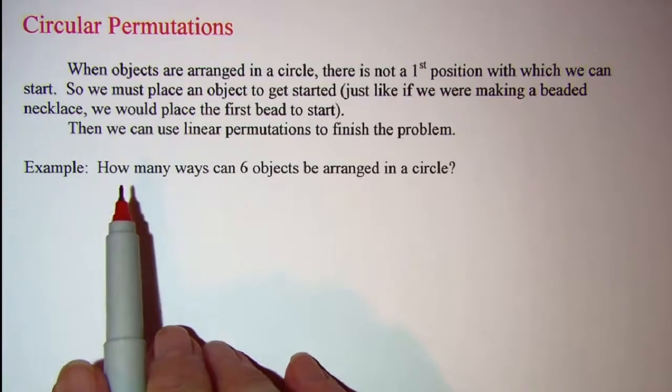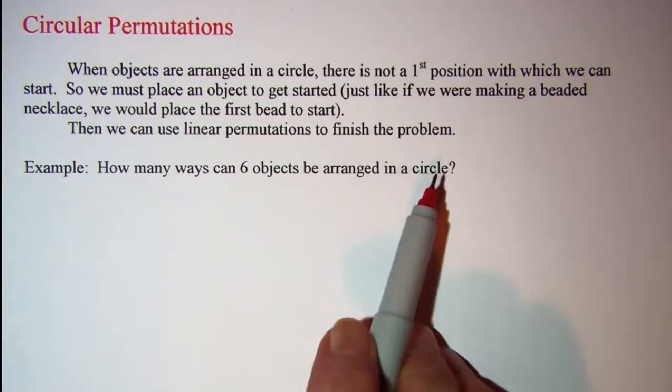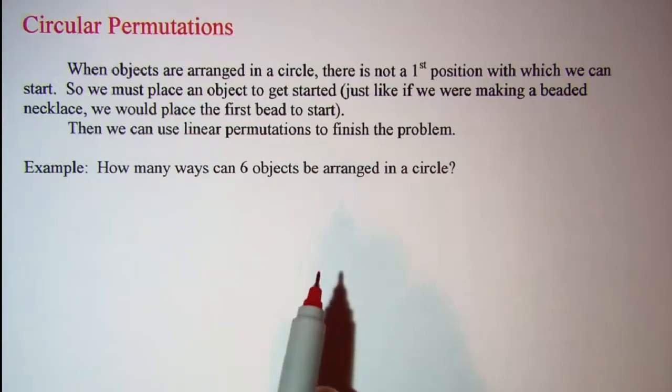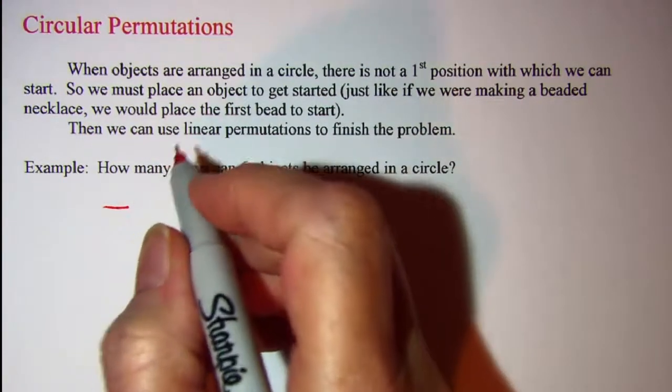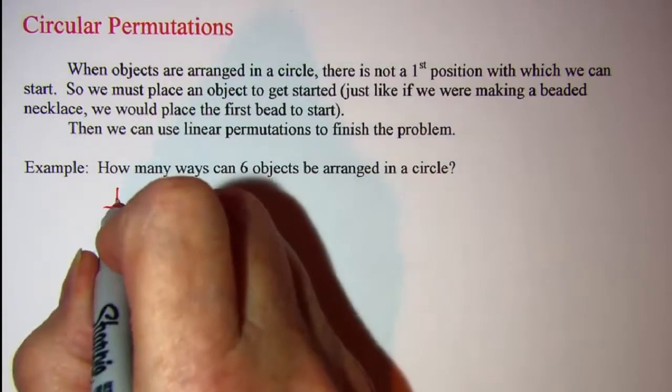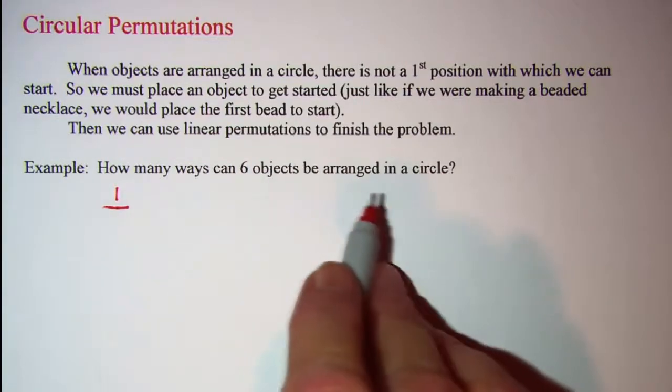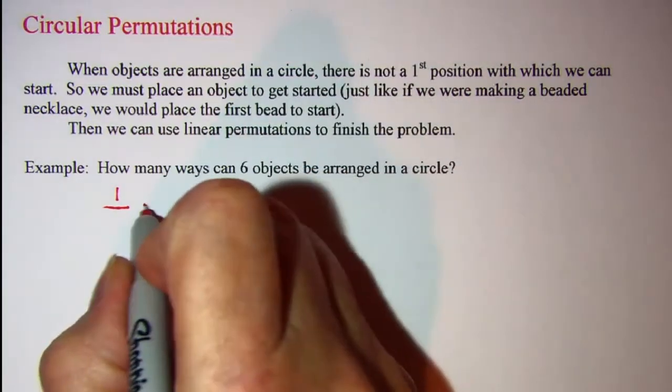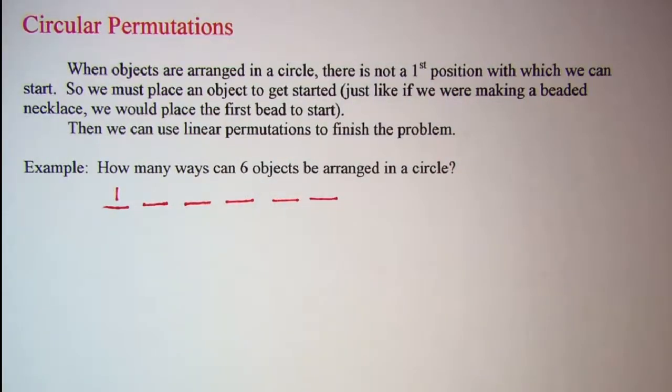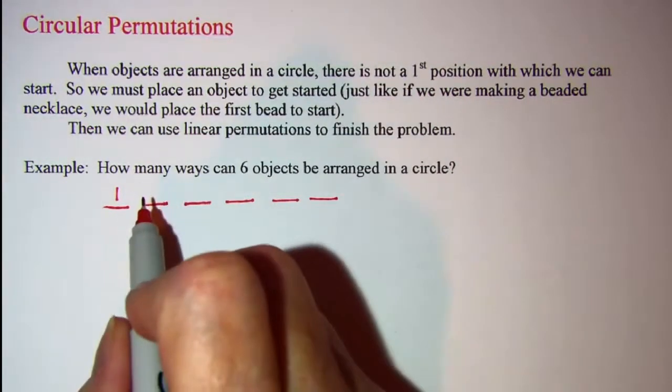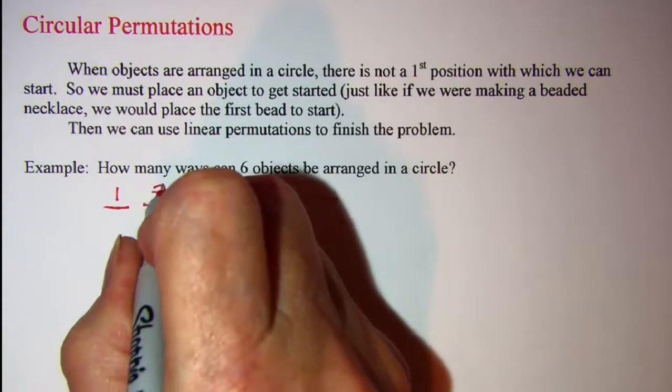The example that we'll be working with is how many ways can six objects be arranged in a circle. So we're going to place our first object and there's one way to do that. And then once I place that first position then I can work with a linear permutation. And so I have five more objects.